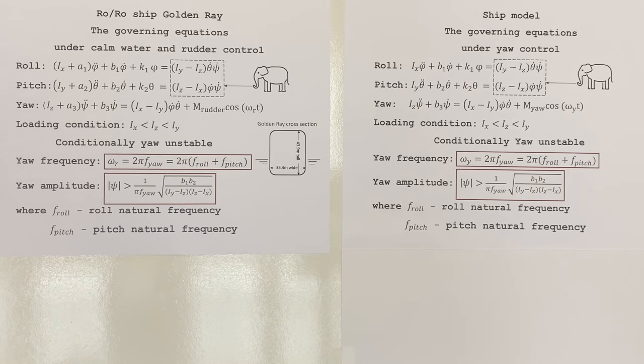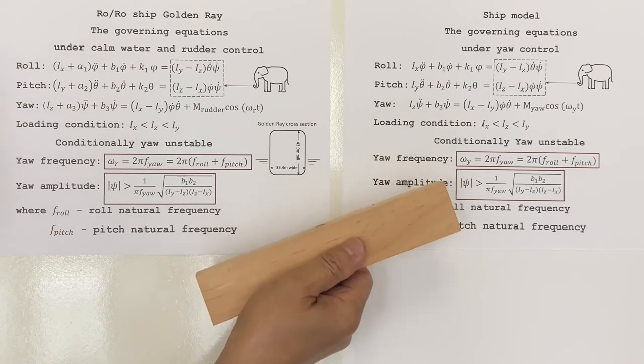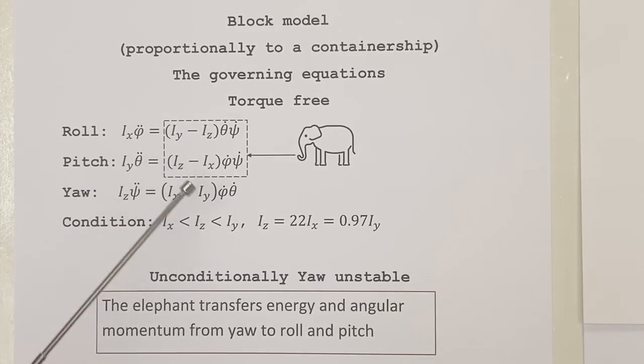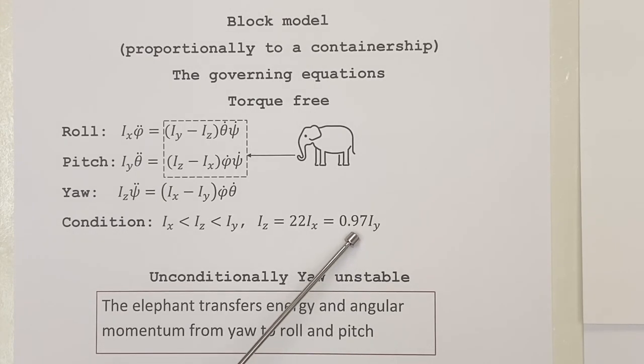Let me show you first what this elephant can do by using this block, which is also a rigid body. These are the governing equations for that block under torque-free conditions. This block is a scaled-down model from a container ship in a certain loading condition. Its yaw moment of inertia is the intermediate one. It is only 3% smaller than its pitch moment of inertia, but 22 times larger than its roll moment of inertia.